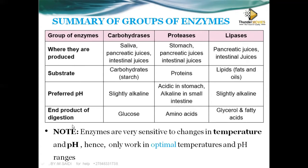We categorize enzymes by the kind of food (substrate) they act upon, their end products, and the pH or medium they work in. We have enzymes found in saliva (the mouth), pancreatic enzymes found in the duodenum, and intestinal enzymes found in the small intestine — the ileum.